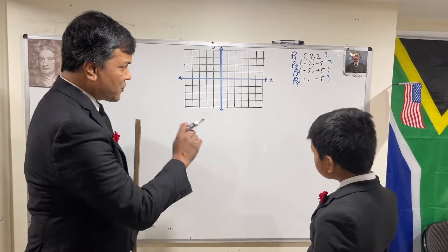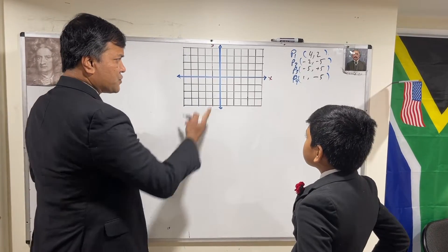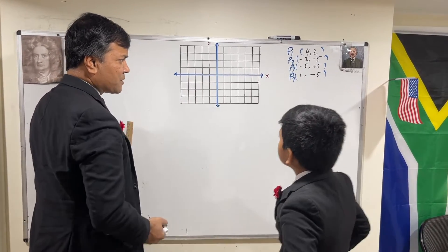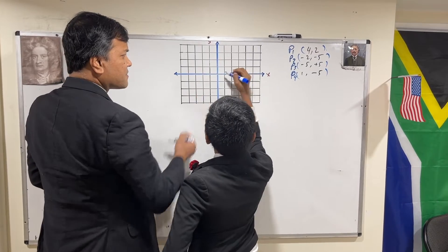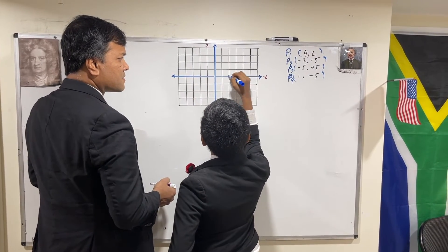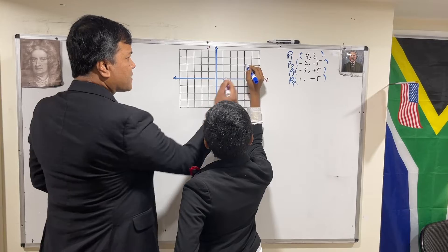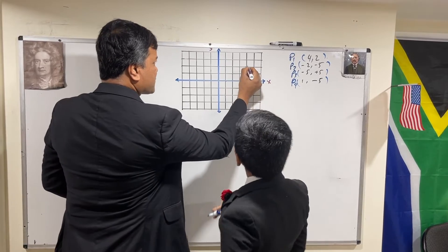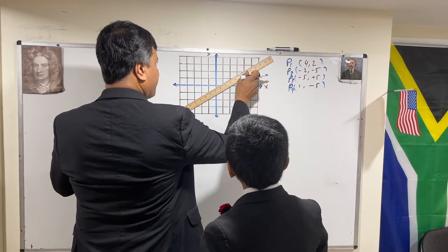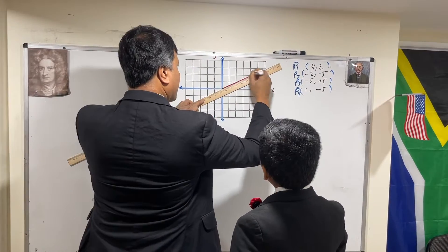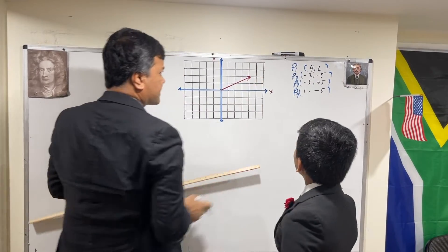Let's count the first vector: 4, 2. Can you show me where (4, 2) is? Counting along X: 0, 1, 2, 3, 4, then Y: 1, 2 — that is correct. So that's (4, 2). Let's connect them. That's correct.